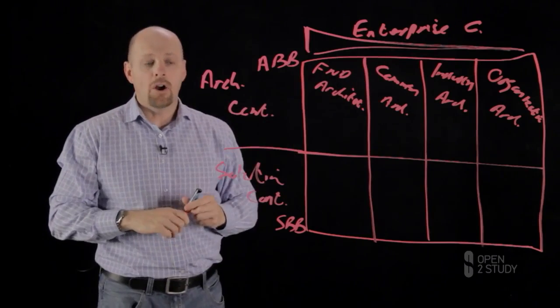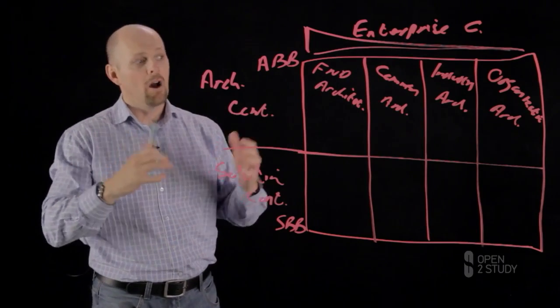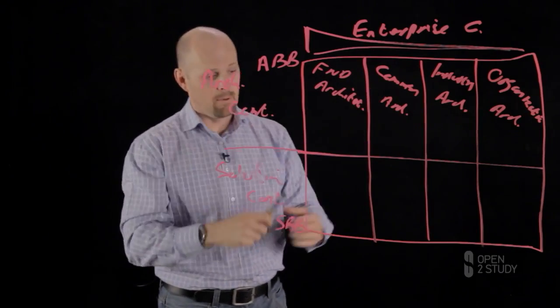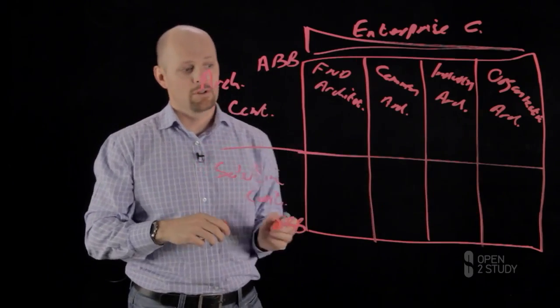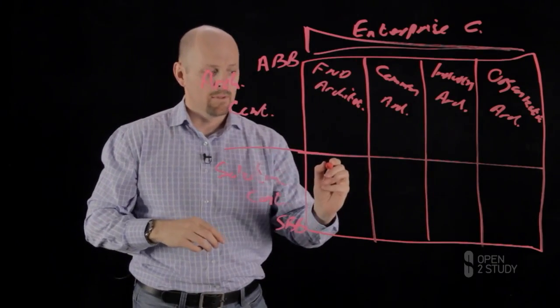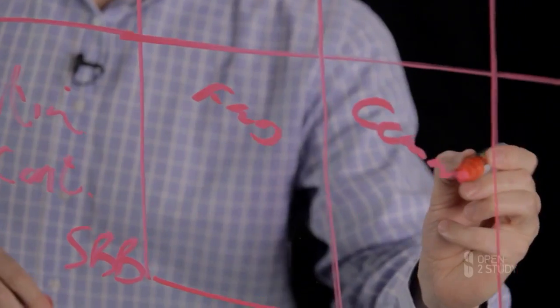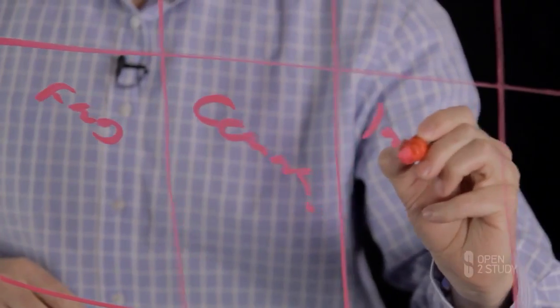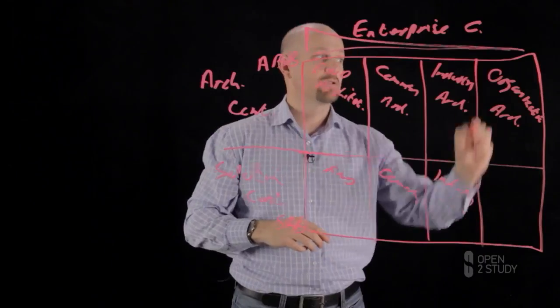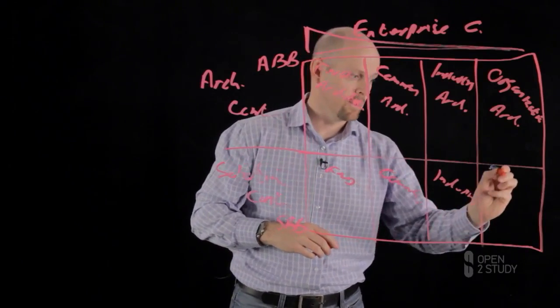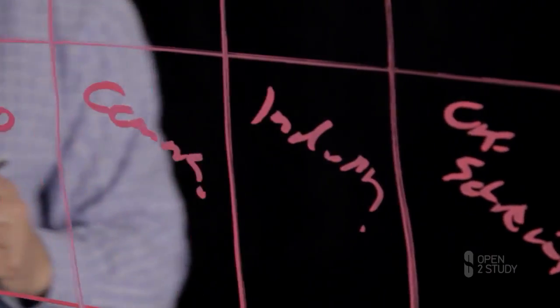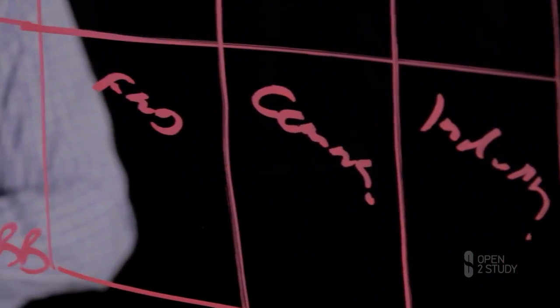Now that's the architecture continuum at the top. The only difference between the top and the bottom is this is the solutions continuum. So this talks about foundation solutions. This one will talk about common solutions. This one will talk about industry solutions. And this one will talk about organizational solutions. And that's really the difference between these two specific layers.